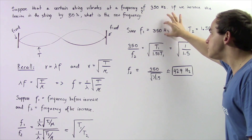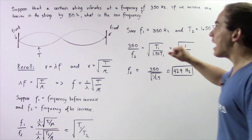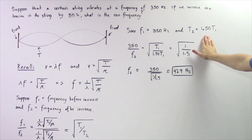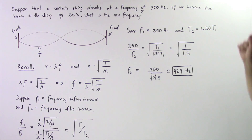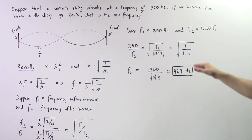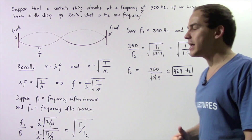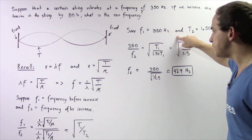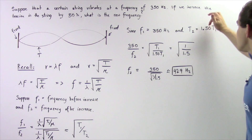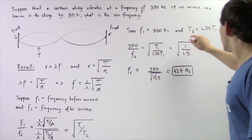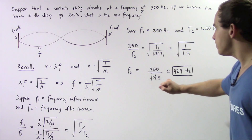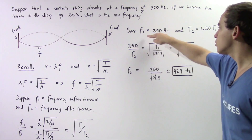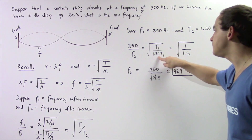Notice that we are given that f1 is 350 Hz and that t1 and t2 are related by the following equation: 1.5 multiplied by t1 is equal to t2. In other words, t2 is 50% greater than t1. So we can take f1 and plug in 350 for f1, and also replace t2 with 1.5*t1. So we get 350 divided by f2 is equal to the square root of t1 divided by 1.5*t1.